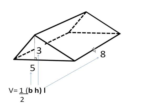Basically what you do is find the area of one of the triangles and multiply that by how long it is.